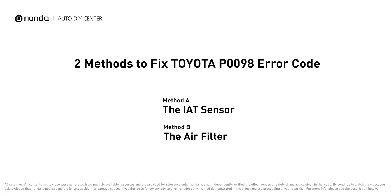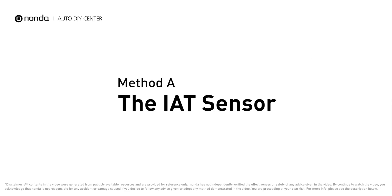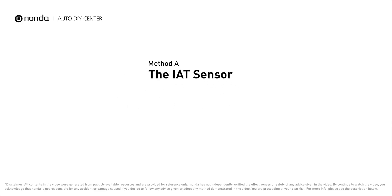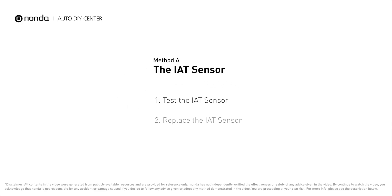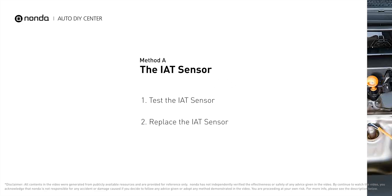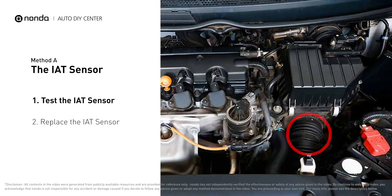Method A: the IAT sensor. The IAT sensor could be on the throttle body, attached right to the intake manifold.